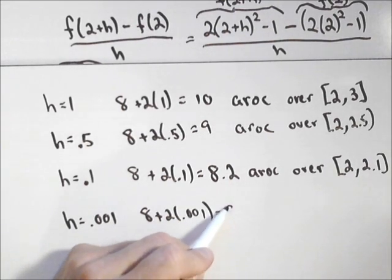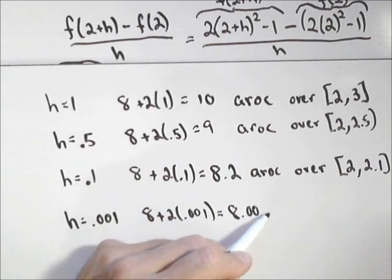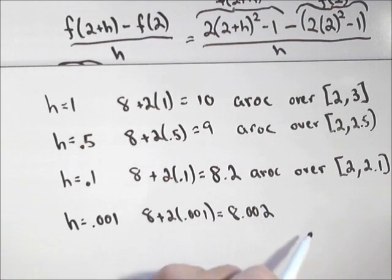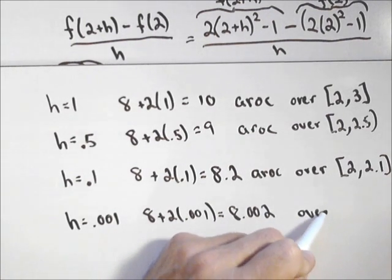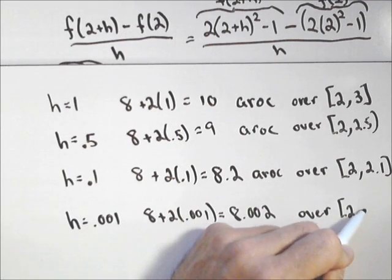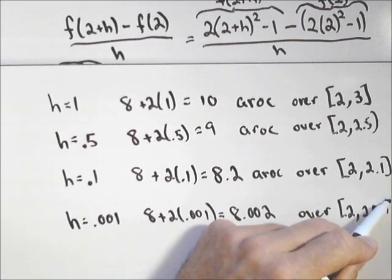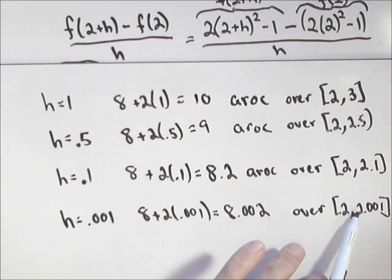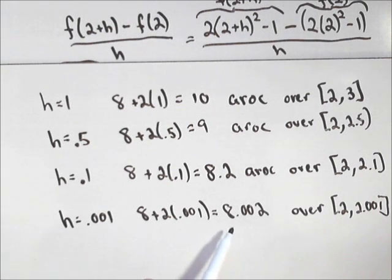or 8.002 over 2 to 2.001. So, we're getting a really small interval. In fact, this allows us to estimate our instantaneous rate of change at 2.